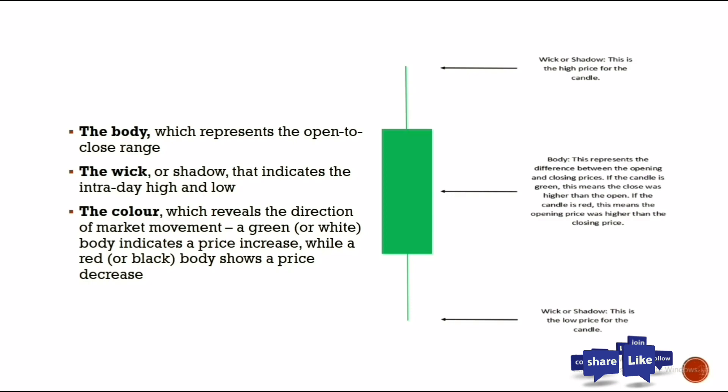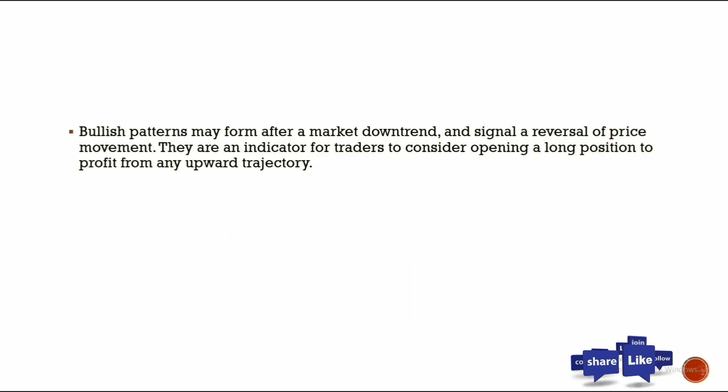Individual candlesticks form patterns, and traders use these patterns to recognize major support and resistance levels on the charts. Now that we know how to read candlesticks, let's look at some patterns they form. When the market is moving, we'll mostly see bullish patterns and bearish patterns. A bullish pattern may form after a market downtrend, signifying a reversal — an indicator for traders to consider opening a long position.